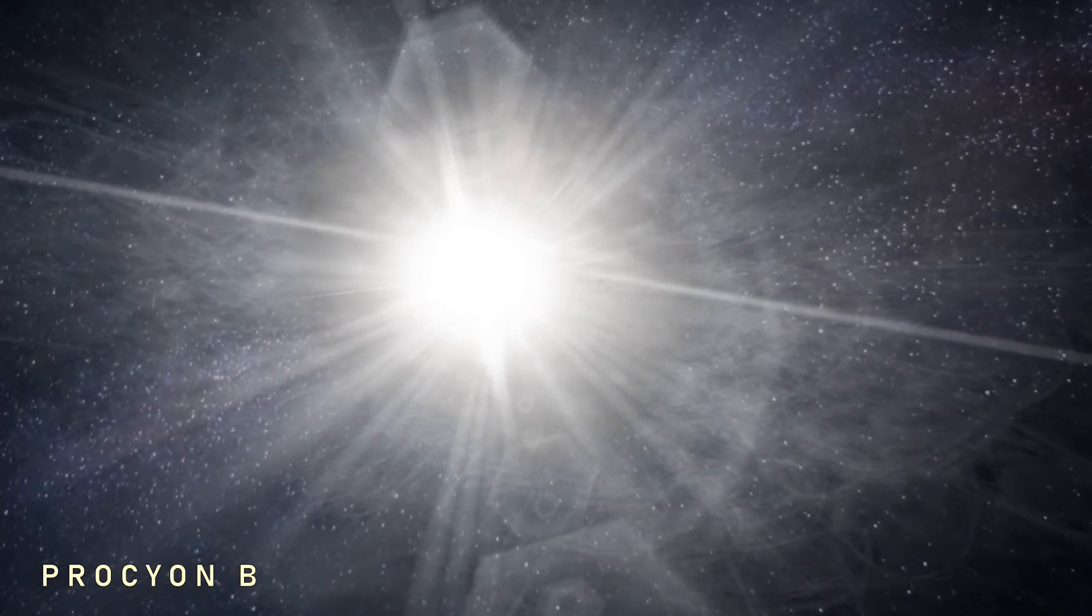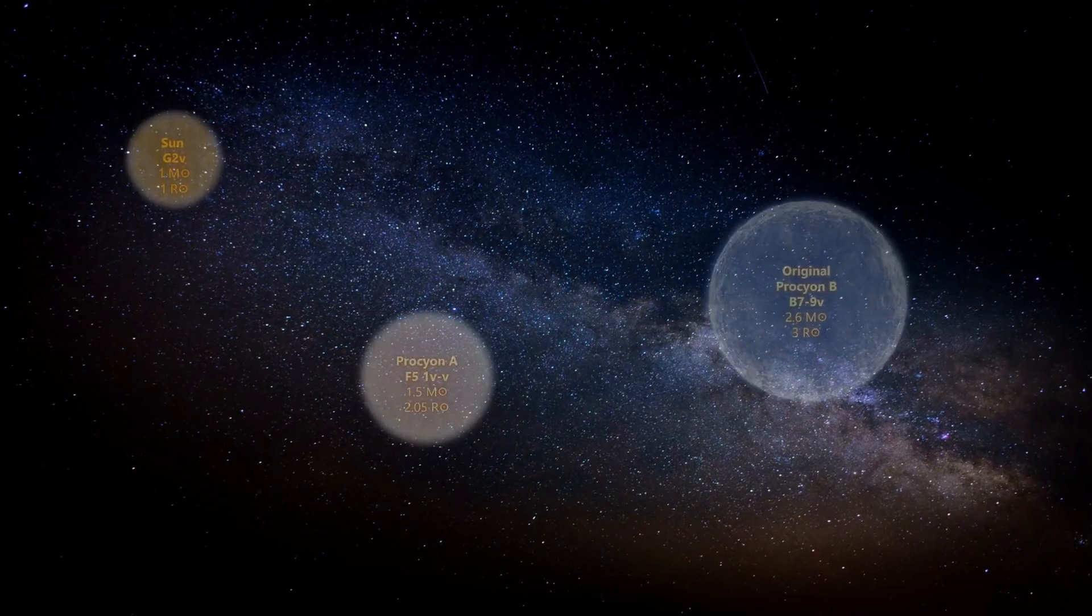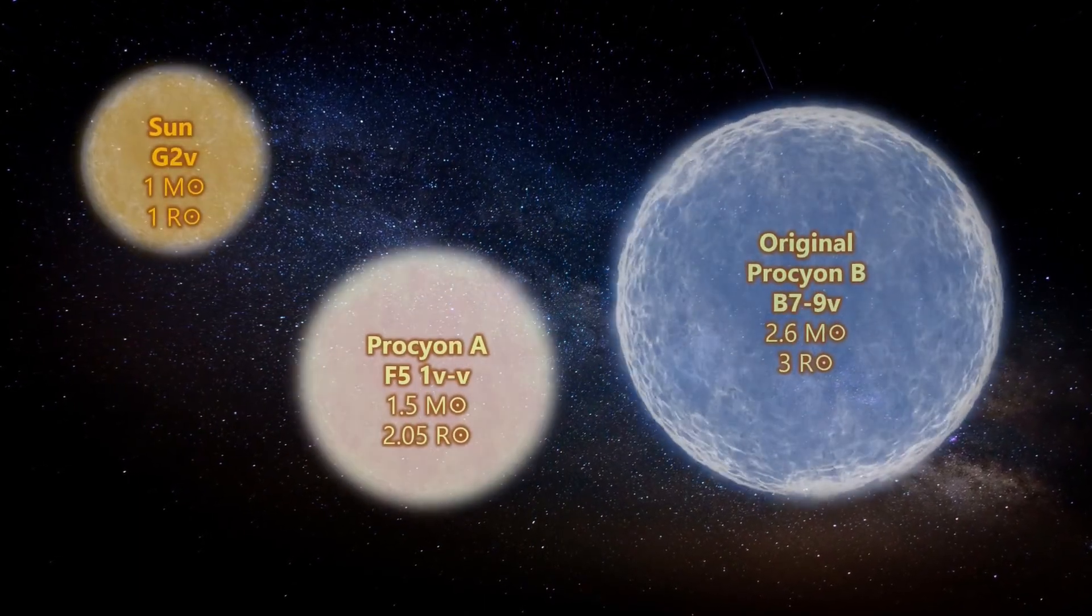There is a mystery related to Procyon B though, in that its mass is unusually low for a white dwarf star of its type. Its surface temperature of 7,740 Kelvin is also much cooler than Sirius B, and this is testament to its lesser mass and perhaps crucially greater age.